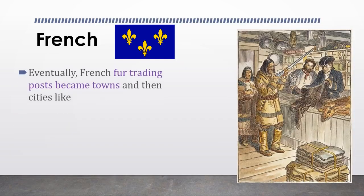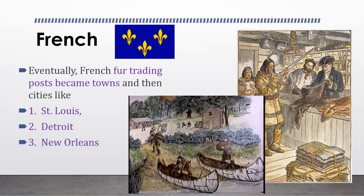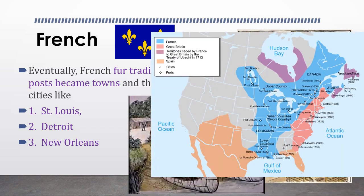The French were determined to set up trading posts throughout the French-explored lands to make repeated trades with the local Indians on a regular basis. Eventually, French fur trading posts became towns and then cities like St. Louis, Detroit, and New Orleans. These trading posts were stationed by soldiers and were thus called forts. These were an integral part of the way the French interacted with the Native Americans in the early days.